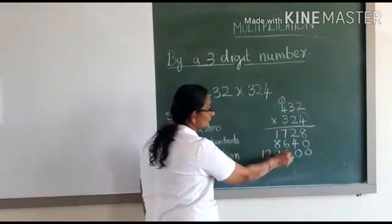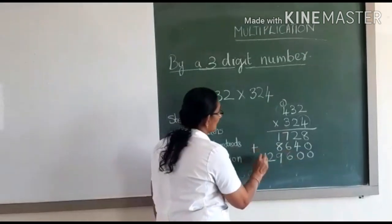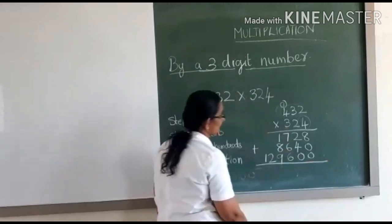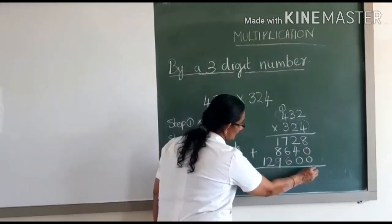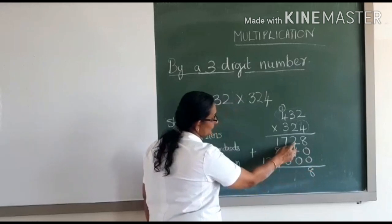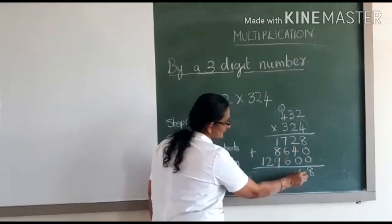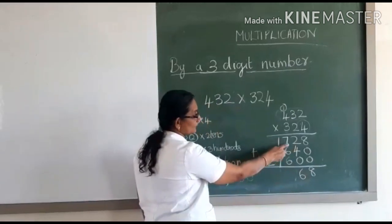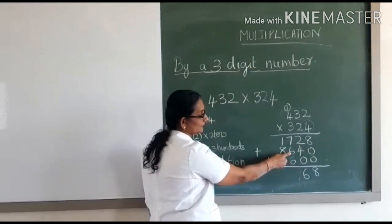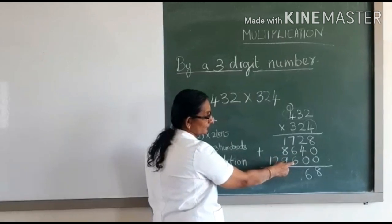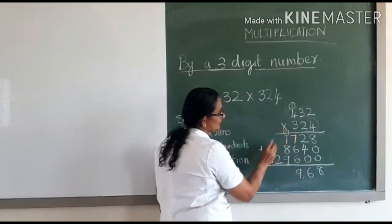You have to add all the three products. Eight plus zero plus zero is equal to eight. Two plus four is six, and six plus zero is six. Now seven plus six is thirteen, and thirteen plus six is nineteen. One is carried over.